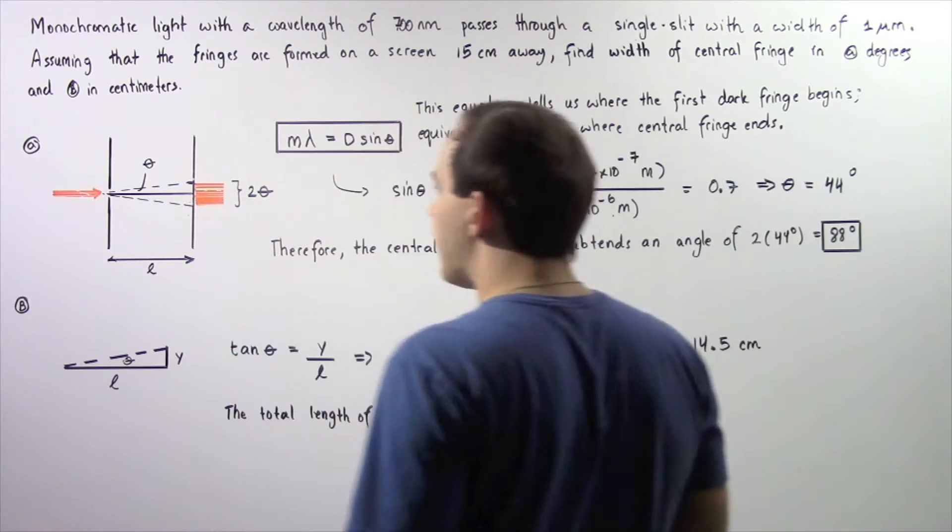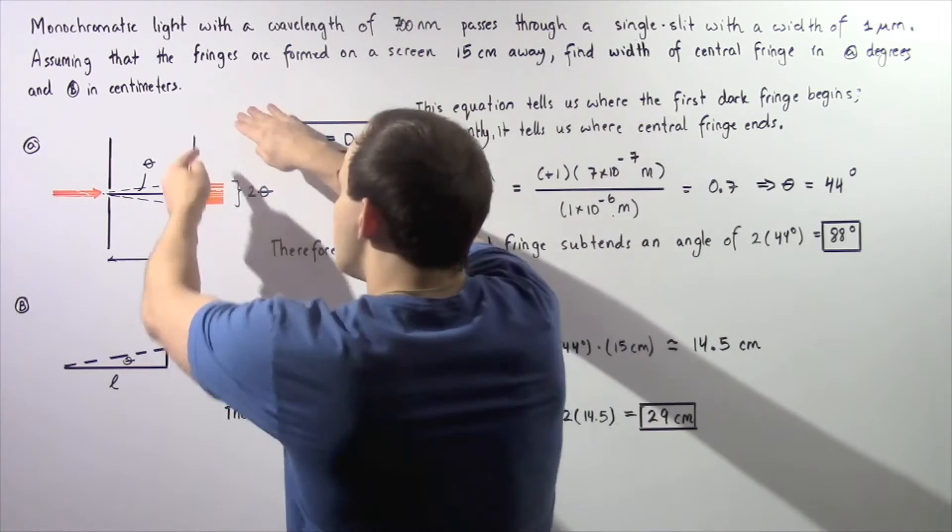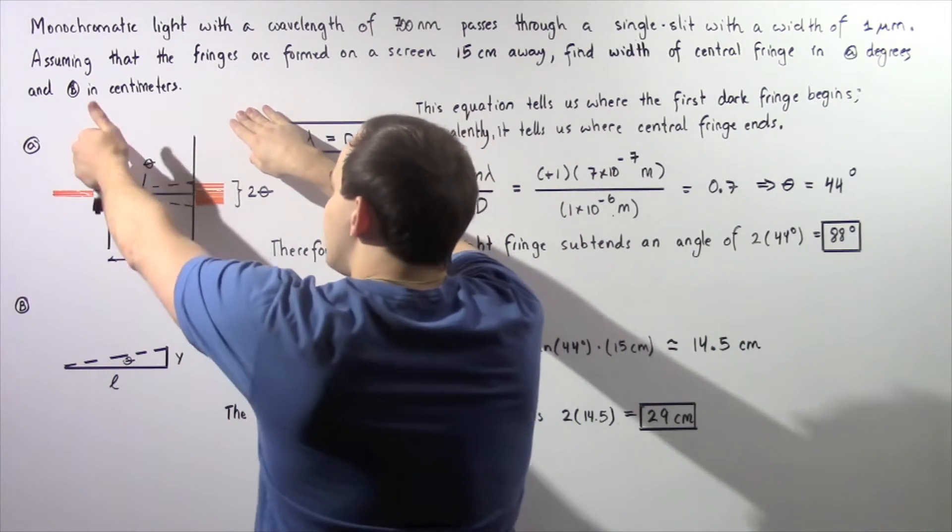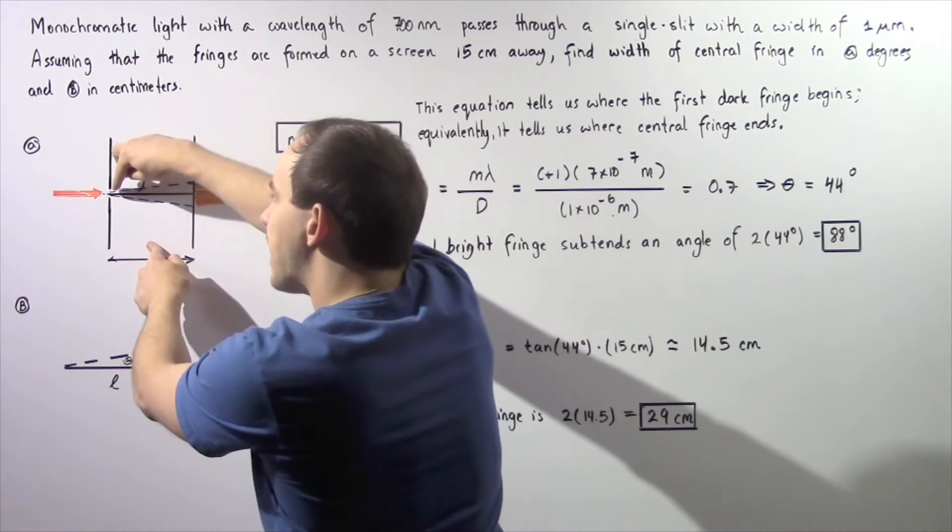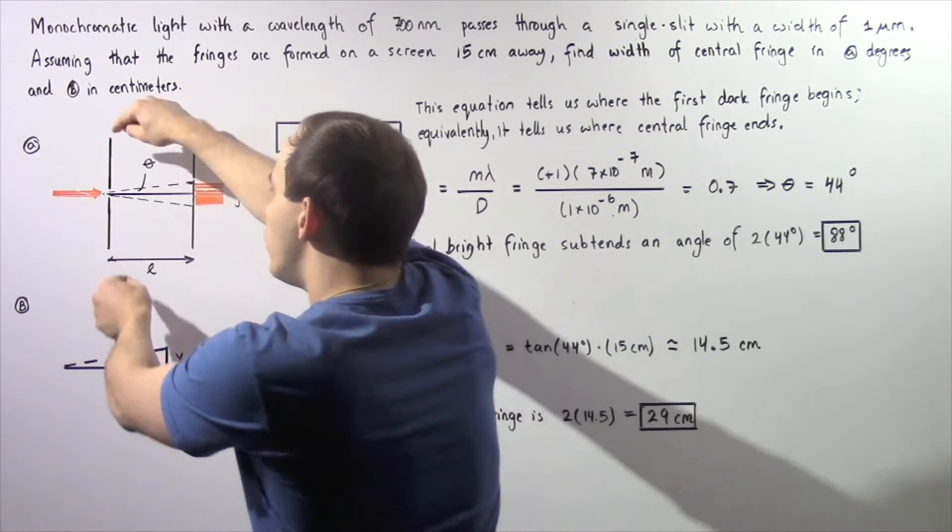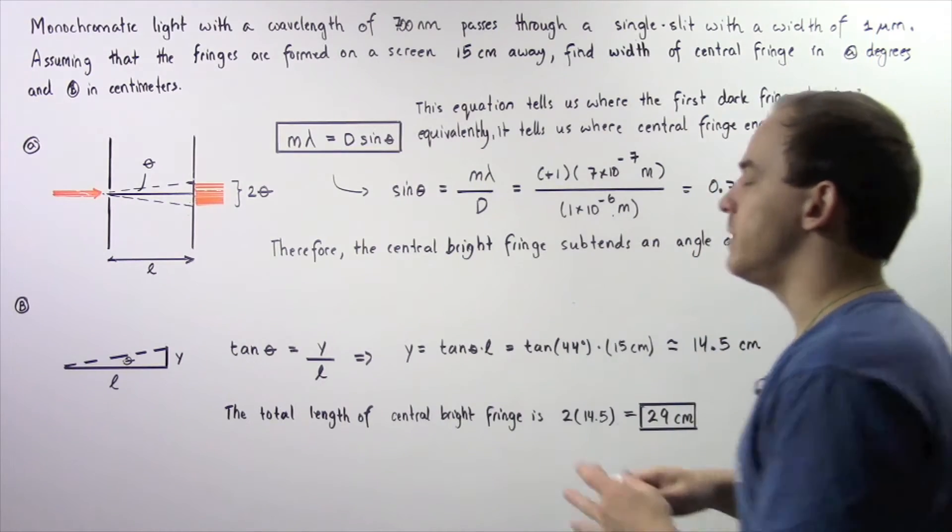Let's begin by looking at the following diagram. We have the viewing screen and we have the screen that contains our single slit with a width of 1 micrometer.